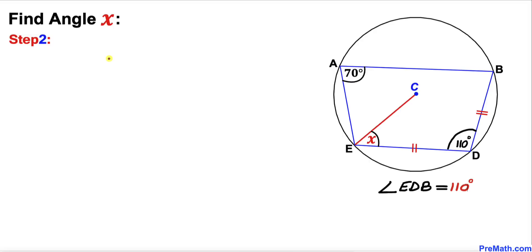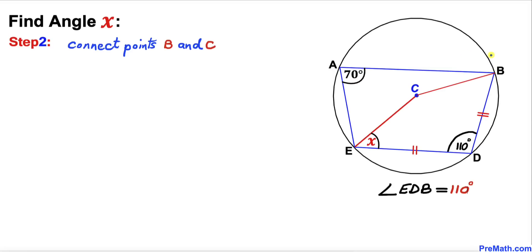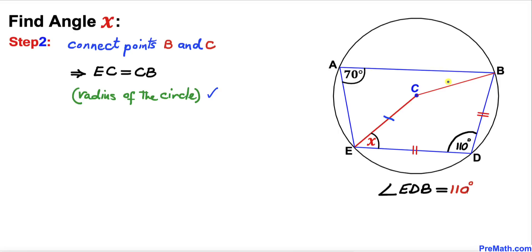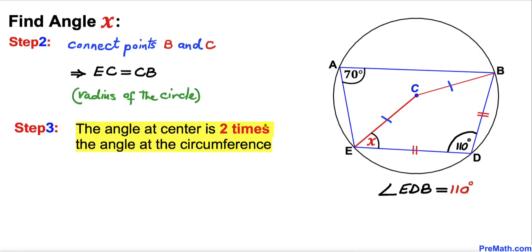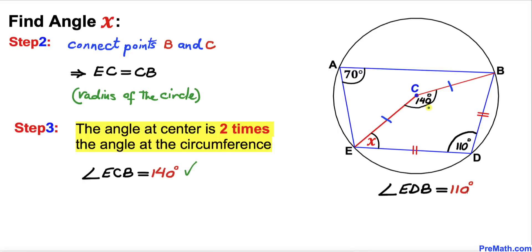For the next step, we do some extra construction to figure out angle x. We connect points B and C. Line segments EC and CB are equal since they are radii of the circle. Recalling that the angle at the center is twice the angle at the circumference, angle ECB must be twice 70 degrees, giving us 140 degrees.